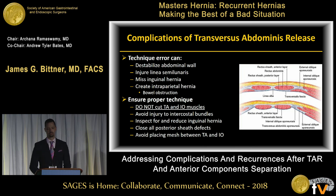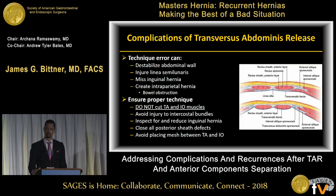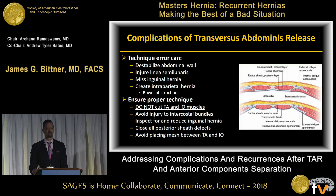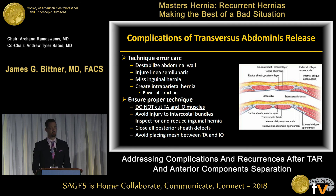TAR also has technical issues such that you can destabilize the abdominal wall, much like after anterior component separation. You can injure the linea semilunaris, miss inguinal hernias that present postoperatively after increased intraabdominal pressure, and create intraperitoneal hernias if the posterior sheath is not adequately closed or holes in the peritoneum are missed. Proper technique is important to avoid injury to intercostal bundles, which may result in muscle atrophy over time and hernia recurrence.